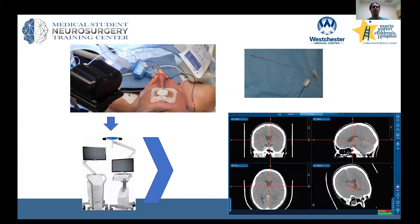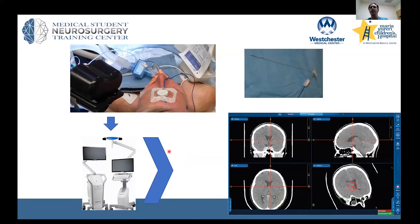In the operating room we use neuro navigation, where there's a fixed reference point on the patient and an electromagnetic field nearby. You trace the contours of the face with a pointer, and a computer registers this information to correlate it with the preoperative MRI — so if you touch the patient's nose, you'll see a dot on the nose in the image. This has revolutionized shunt and tumor surgery, allowing you to plan your exact trajectory, entry point, target, distance, and catheter length very precisely.